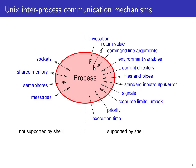A process can receive command line arguments and environment variables. You can execute a process in a current working directory. Processes can open files and pipes, and they have three files opened by default known as standard input, standard output, and standard error.